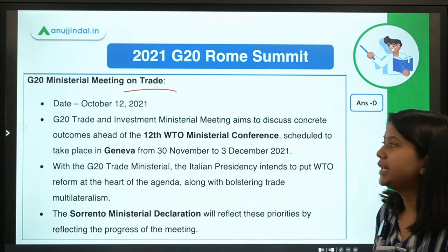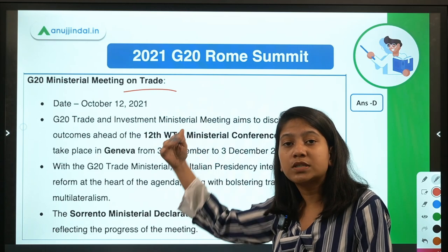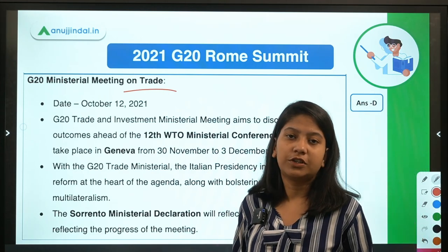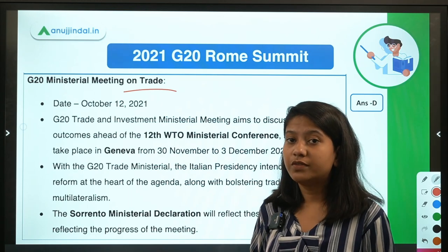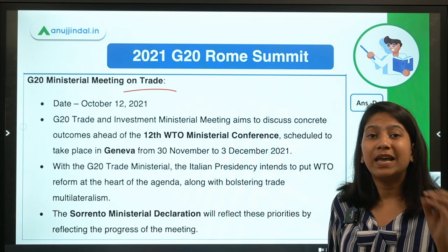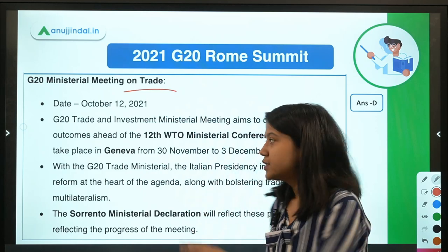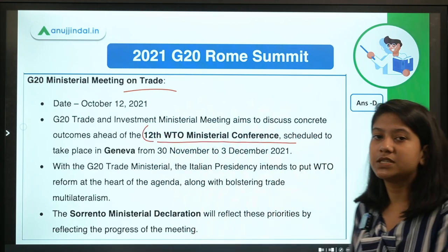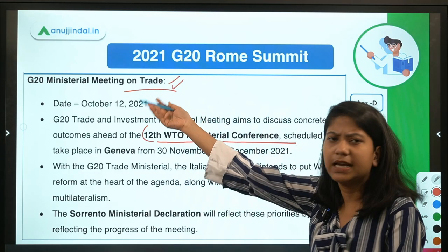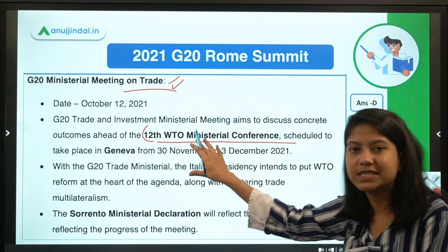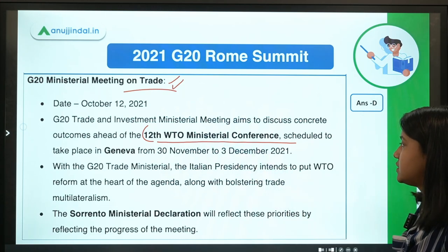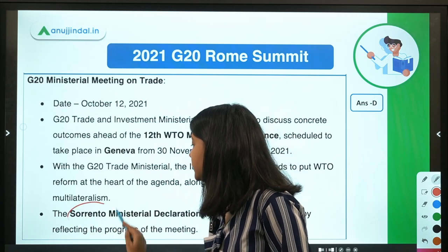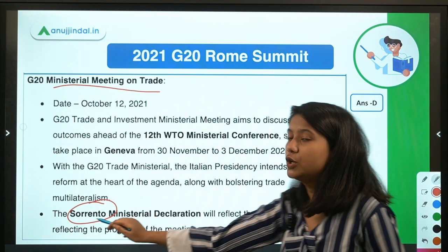The G20 Ministerial Meeting on Trade is a very important meeting because it addresses reforms in the World Trade Organization (WTO). Many countries are calling for WTO reforms as the dispute resolution mechanism is currently not very effective. The objective was to form a concrete plan ahead of the 12th WTO Ministerial Conference, which will take place in Geneva in November and December. The venue of this G20 ministerial trade meeting was Sorrento, Italy.